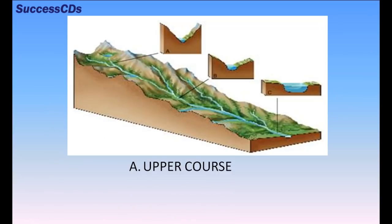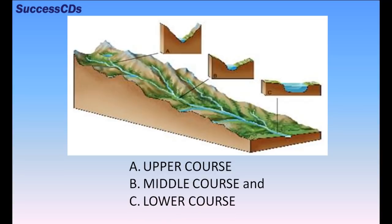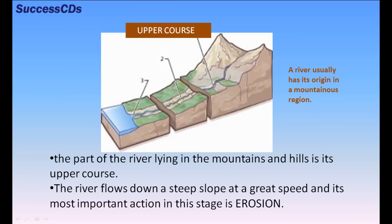The course of the river may be divided into three sections: the upper course, the middle course, and the lower course. A river usually has its origin in a mountainous region. The part of the river lying in the mountains and hills is its upper course.